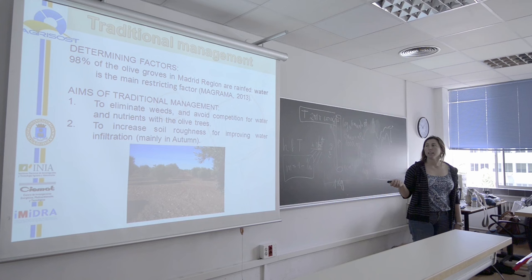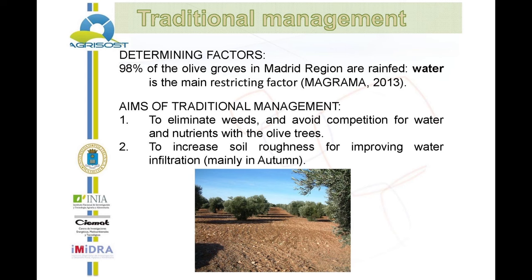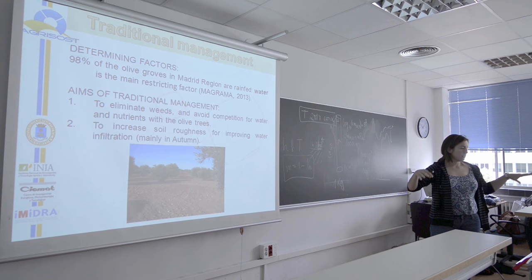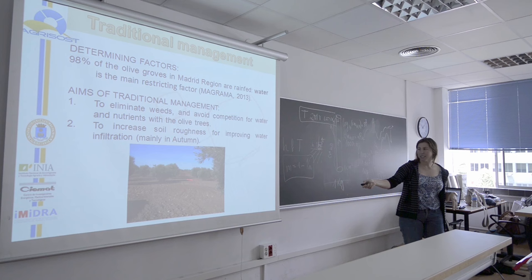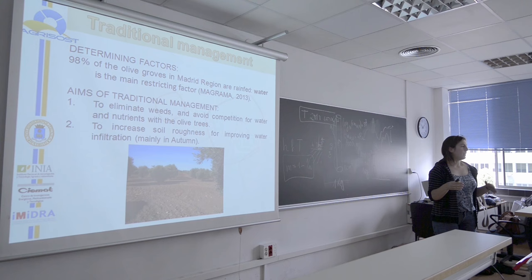The problem in olive crops in Madrid is that 98% of the olive crops are rain-fed and the precipitation is not so high. So water is the main limiting factor to this crop. The farmers deal with this problem by putting the olive trees in a high-density area — 10 meters by 4 meters spacing — so the density of the olive crop is around 100 trees per hectare.